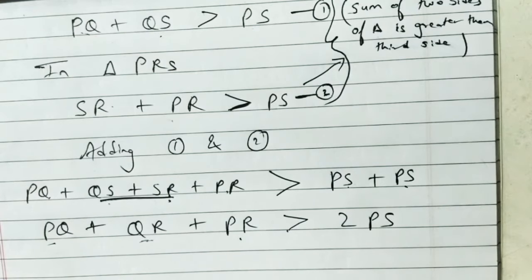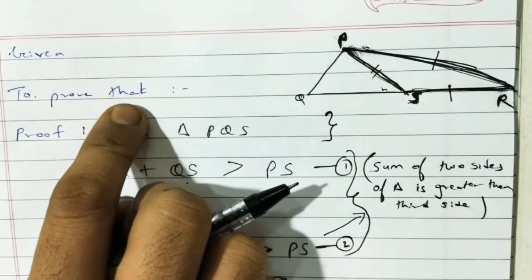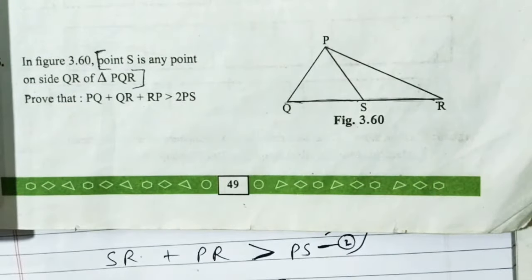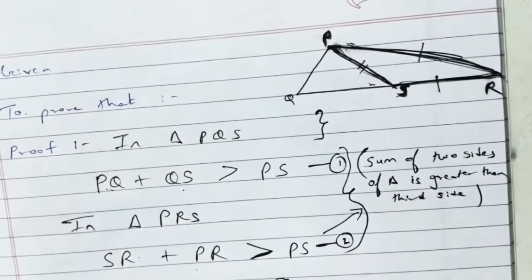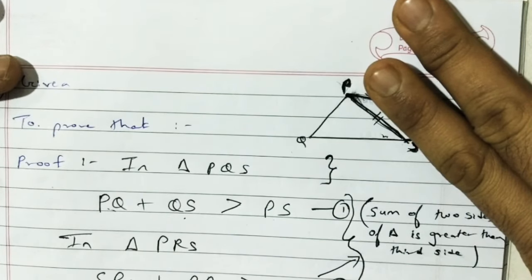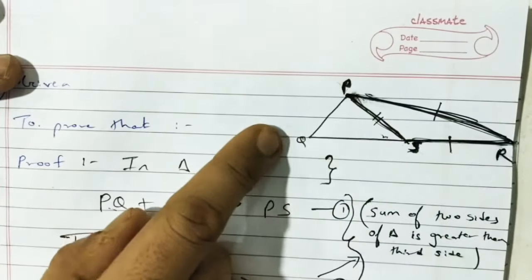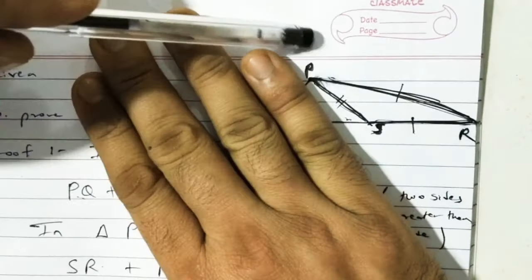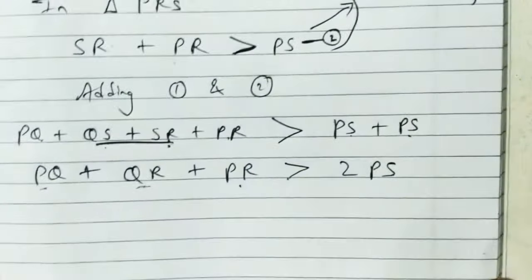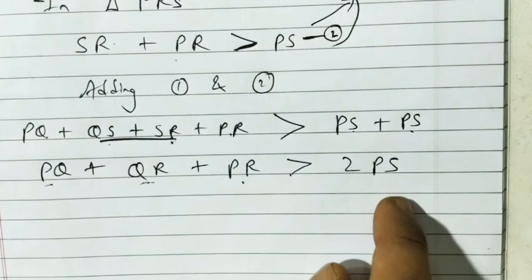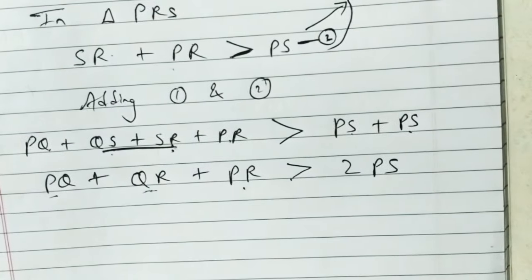This is a very simple sum, easily done — just four steps. Given and 'to prove' should be copied from the question. First we took the left triangle PQS and used the property that sum of two sides is greater than the third side: PQ plus QS greater than PS. Then right triangle PRS, same property: SR plus PR greater than PS. Then added both, QS plus SR becomes QR, and hence proof is done.